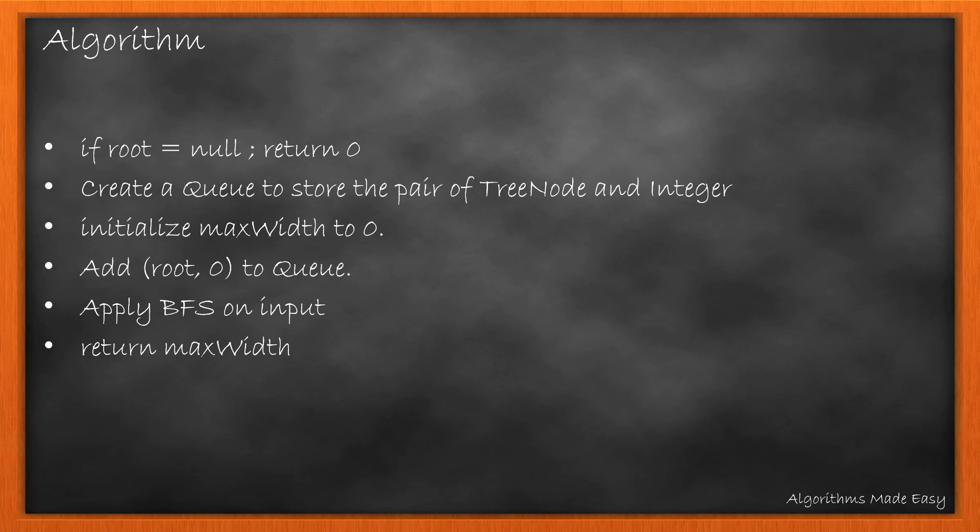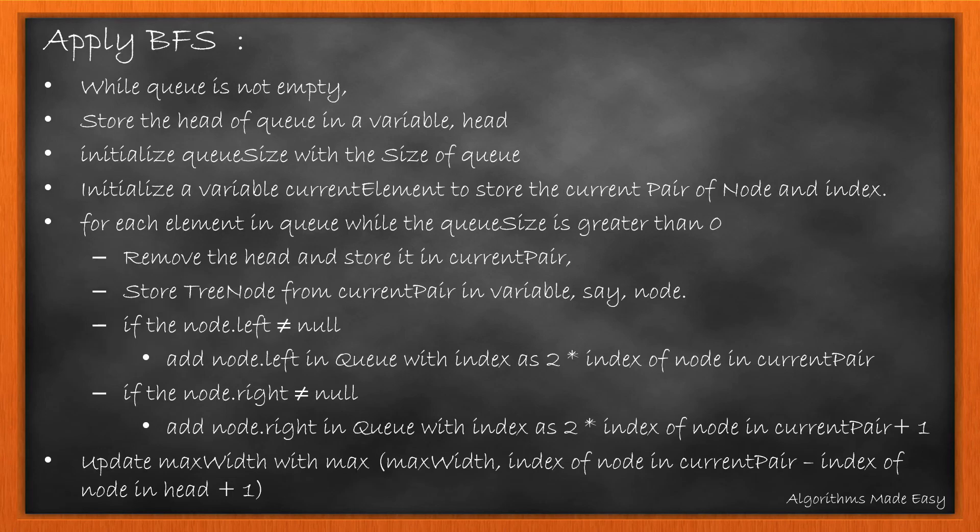Now let's take a look into BFS process. We loop through the queue if it is not empty. We will first store the head of queue in variable, say head. This will give us the start index. We will store the size of level as queue size which is nothing but the size of queue. For simplicity, we will initialize a variable current element to store the current pair of node and index. Now for each element in queue while the queue size is greater than 0, that is while we are at the same level,